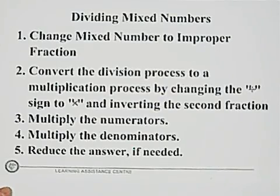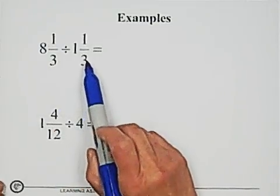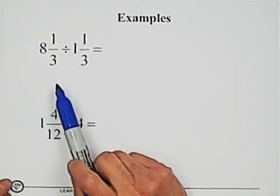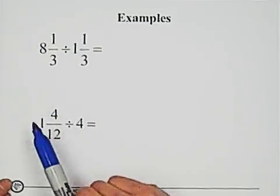There are some examples. The first example, 8 and 1 over 3 divided 1 and 1 over 3. The first step, change mixed number to improper fraction.